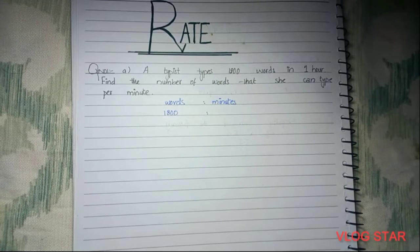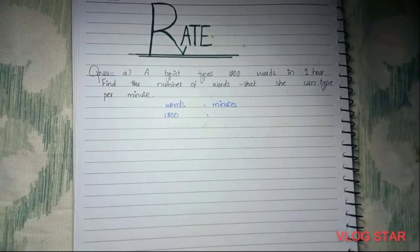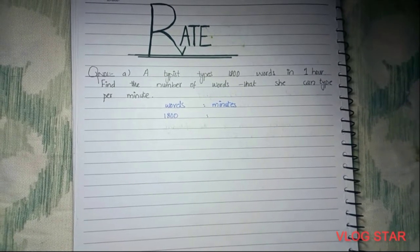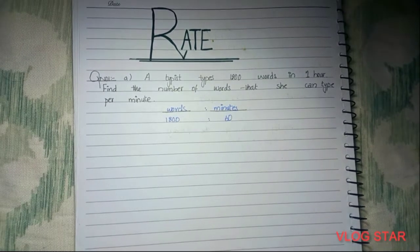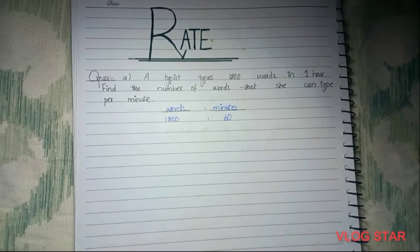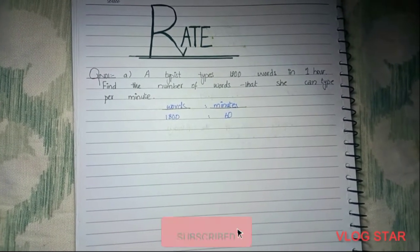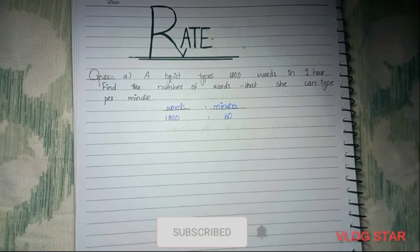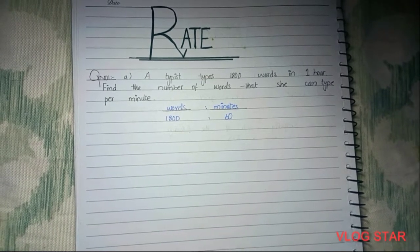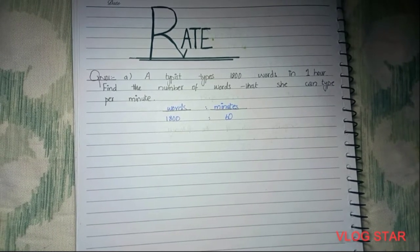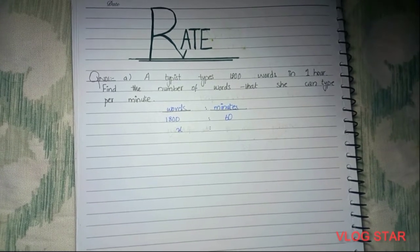So the typist types 1800 words in 60 minutes. The question asks: find the number of words she can type per minute. Since the number of words per minute is unknown, we consider it as x. So we have x words to 1 minute.